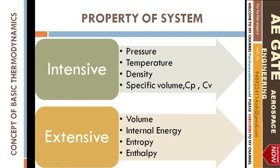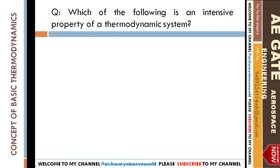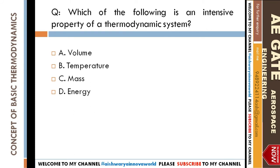From an exam point of view, you may be asked to pick the correct option for intensive or extensive properties. Question: which of the following is an intensive property of a thermodynamic system — volume, temperature, mass, or energy? Intensive means independent of mass. Volume, mass, and energy are all dependent on mass. Temperature is independent of mass, so the answer is B: temperature is an intensive property.